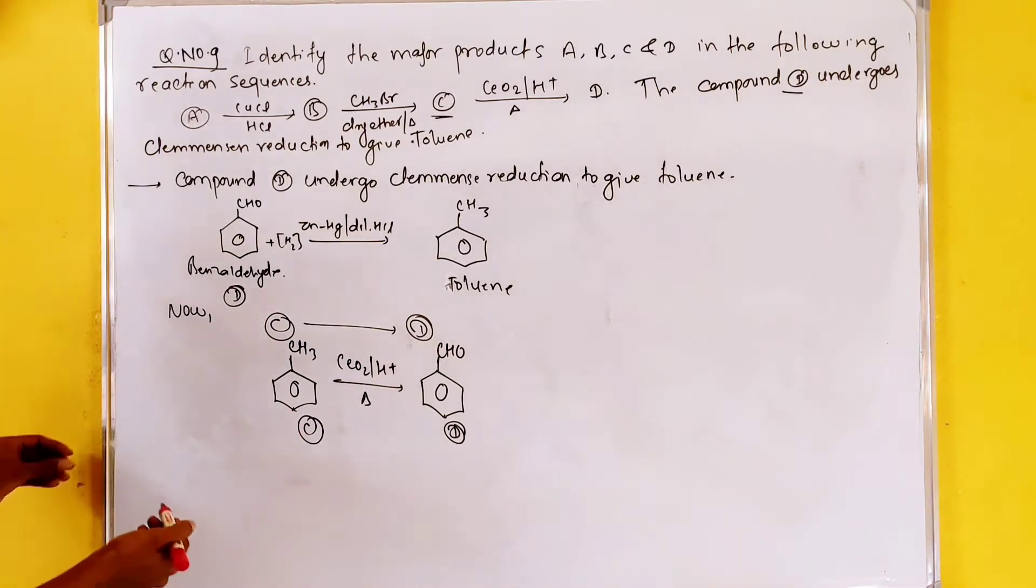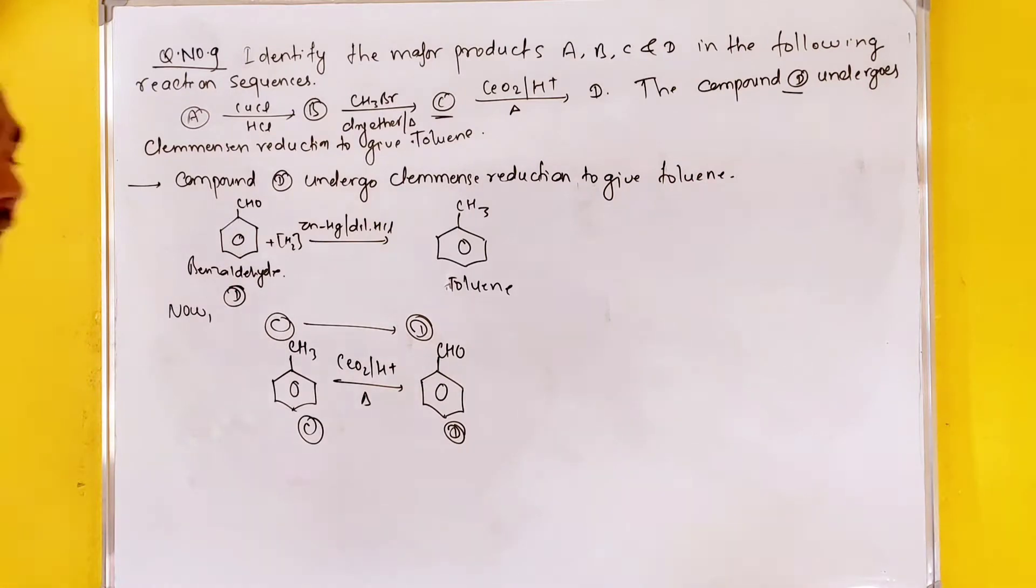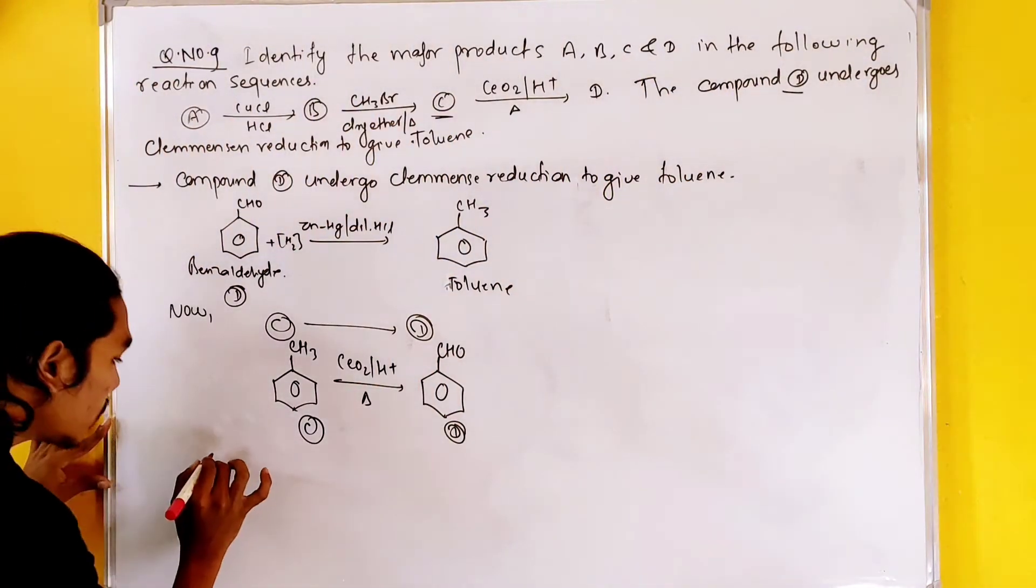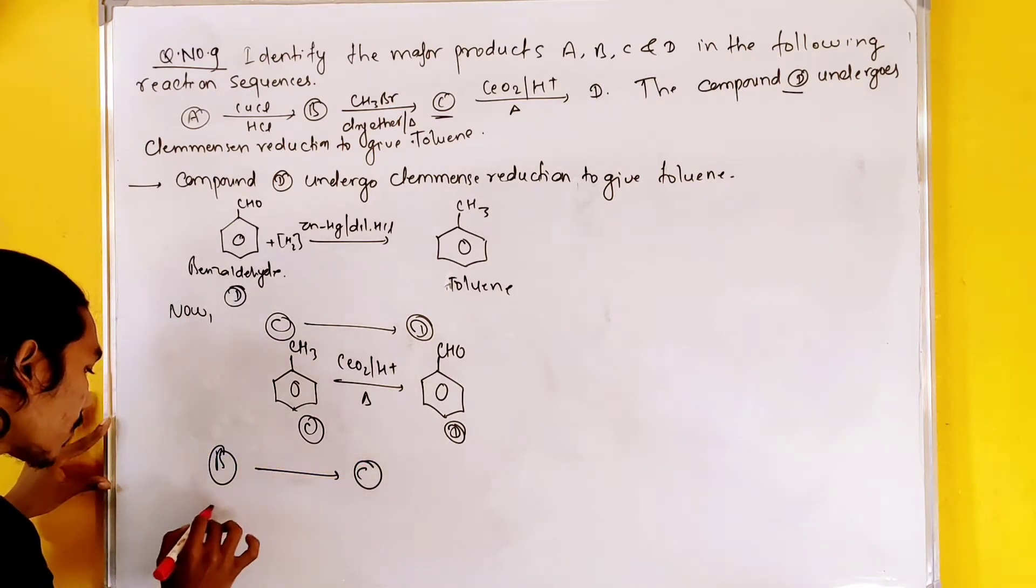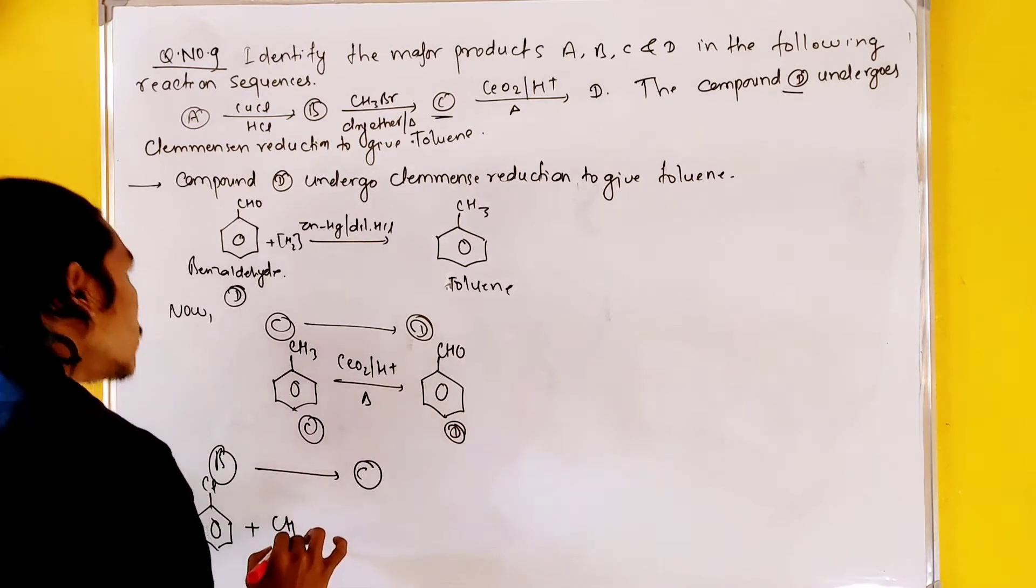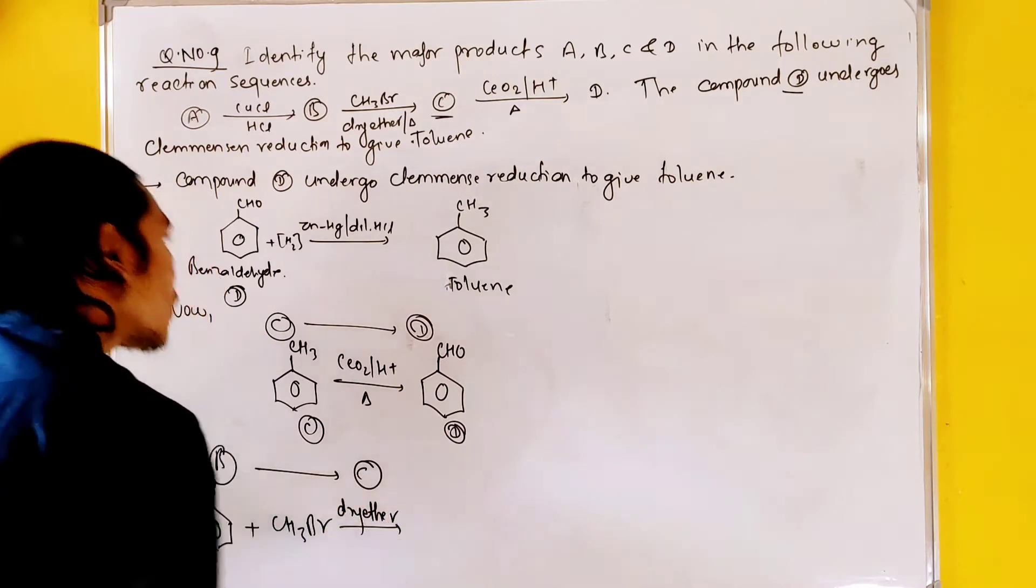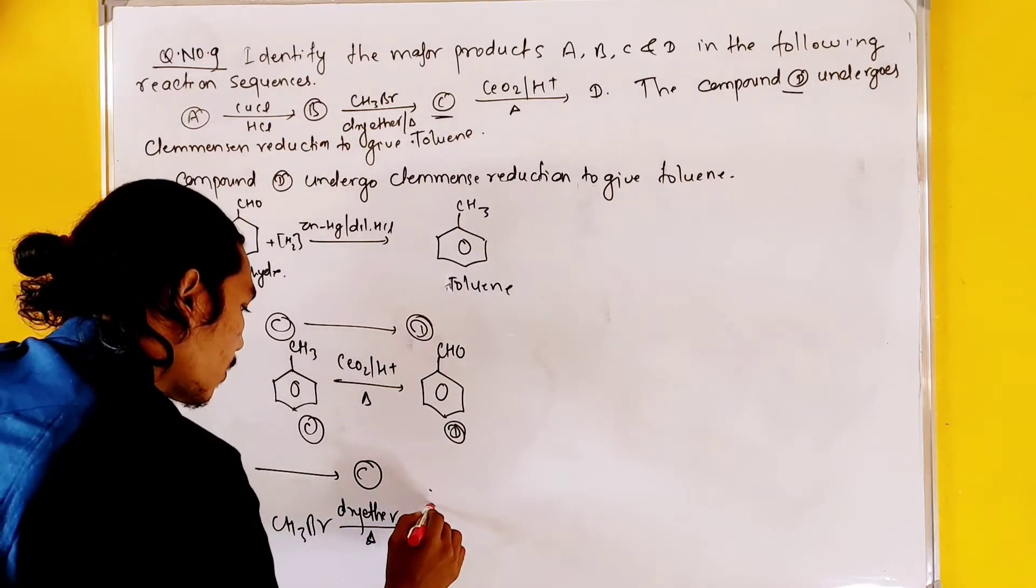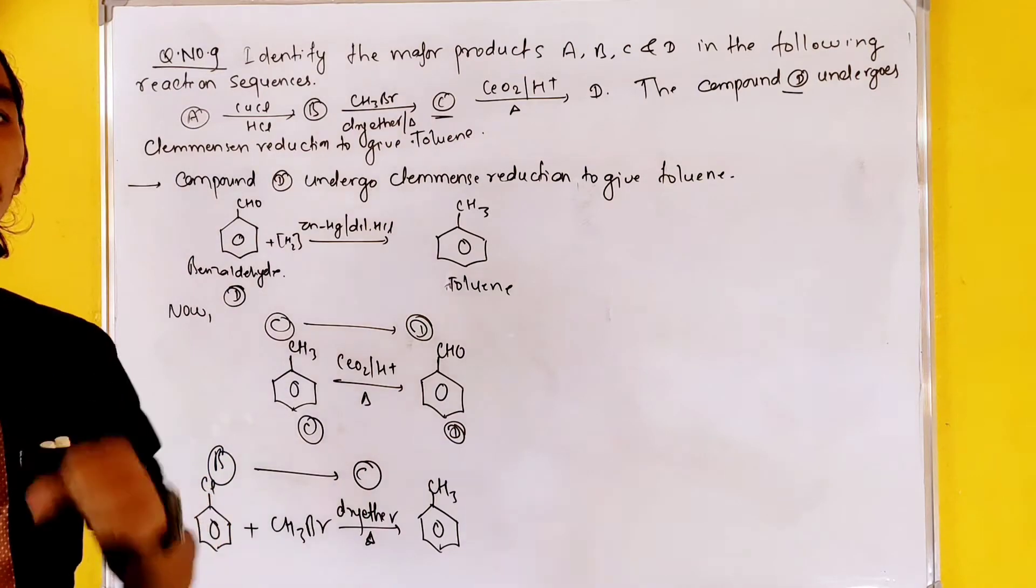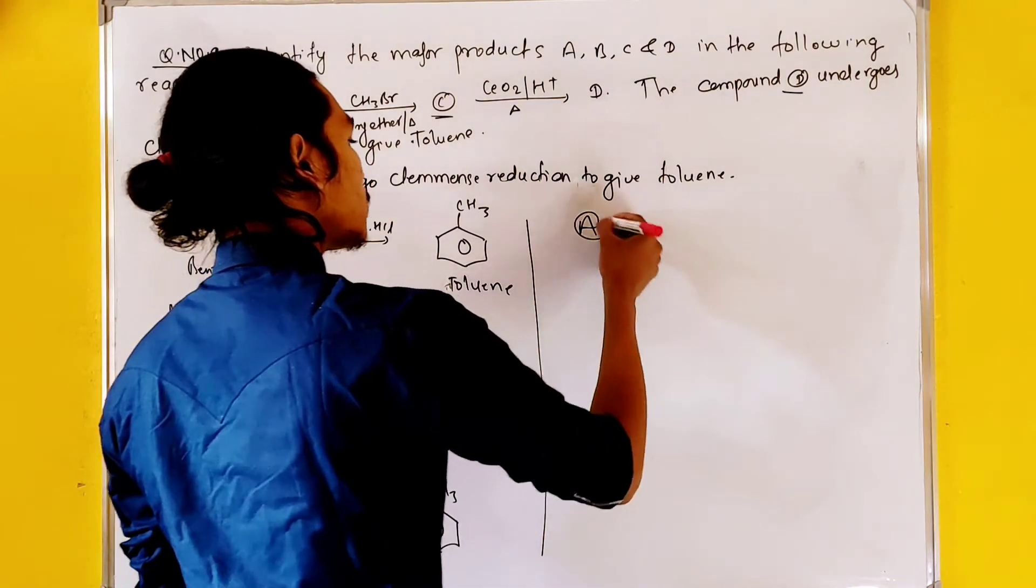Toluene and D benzaldehyde. Now again we can see B and C. Compound formation: toluene, B could be chlorobenzene or chloride. Compound B might be chlorobenzene. CH3Br, that is why we put dry ether with heat. That is why we put the formation of toluene.